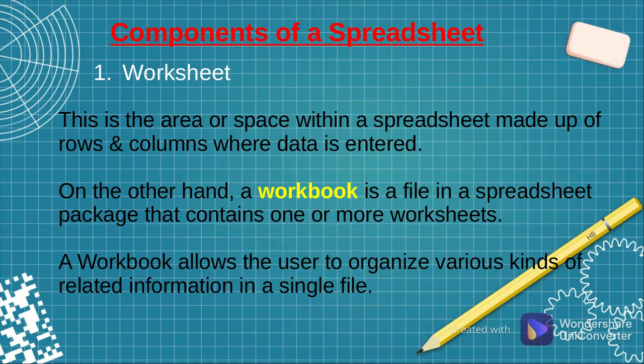The first component in an electronic spreadsheet is what we call the worksheet. The worksheet is that work area — the space where data is entered and manipulated — and it is divided into rows and columns. A collection of worksheets forms what we call a workbook. A workbook is the file that you save during or after the use of this electronic spreadsheet, and a workbook can comprise of one or more worksheets.